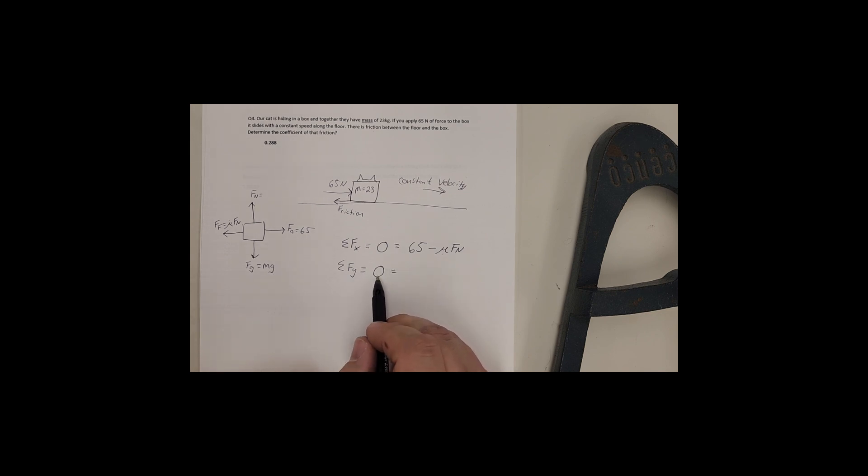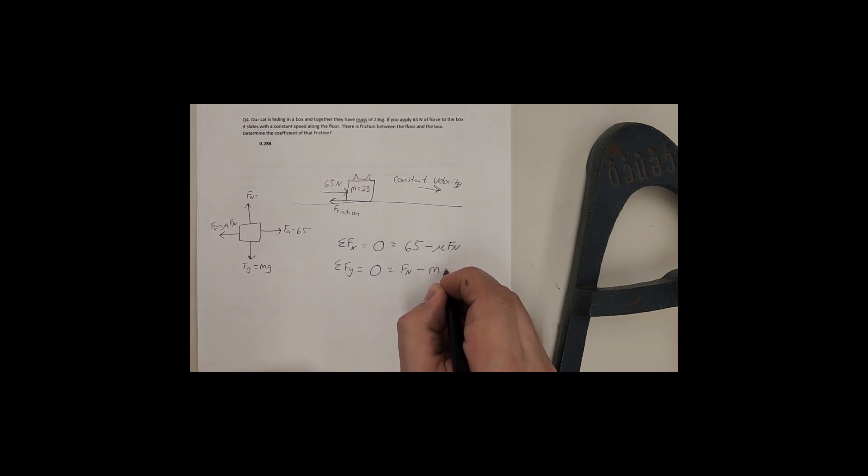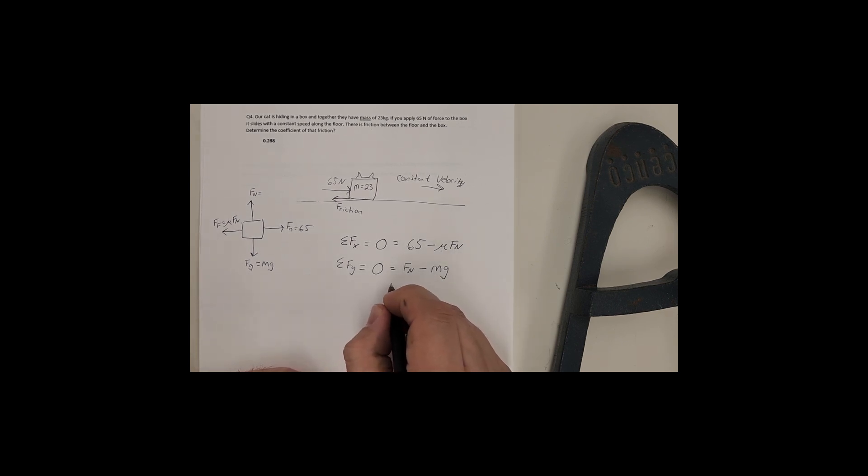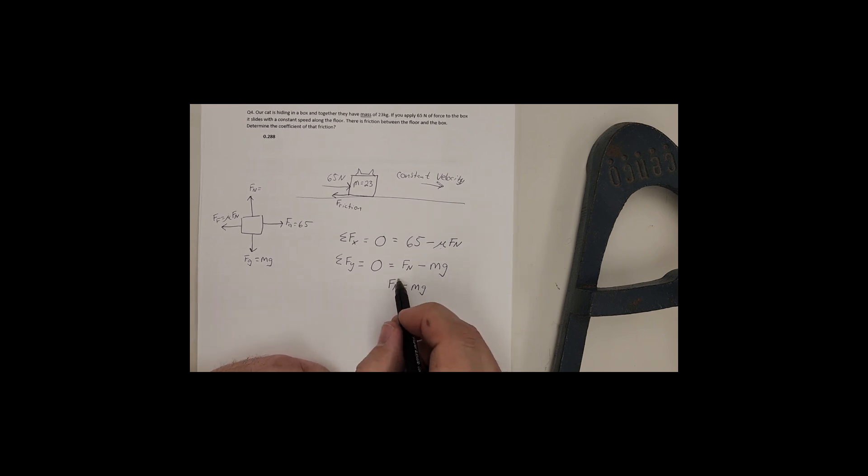In the y, I know it's zero. I know that f n points up, the normal force. And I know that f g points down. So I'm going to have a minus m g. If this is equal to zero, I can just move m g to the other side. And that will tell me that the normal force is equal to m g. Now that I know what the normal force is equal to, I can plug it into my first equation.